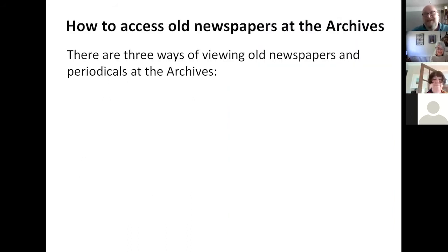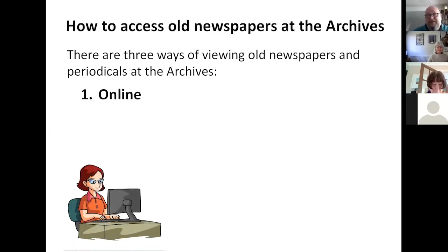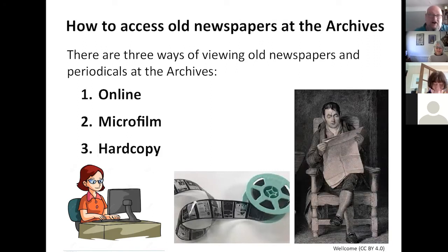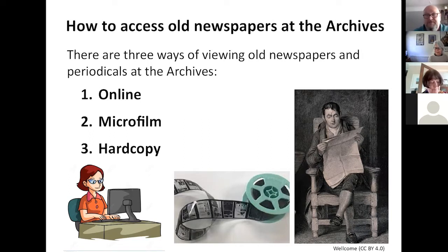So how do you get to look at these? There are three ways of viewing these old newspapers and periodicals at the archives. One: online — it's the easiest way. Two: microfilm — a lot of us have used it, a lot of us love it, a lot of us loathe it as well. Or you can look at the hard copies. We do try to ask people not to use the hard copies, basically because they are quite fragile. Online and microfilm is the preferred way.